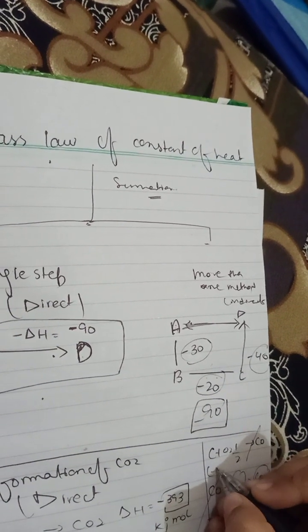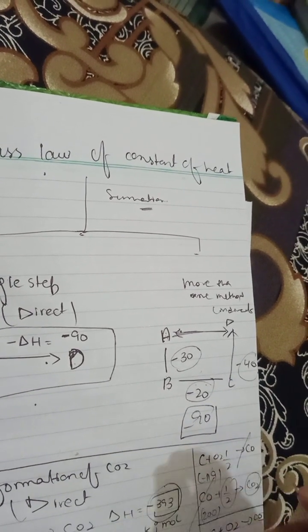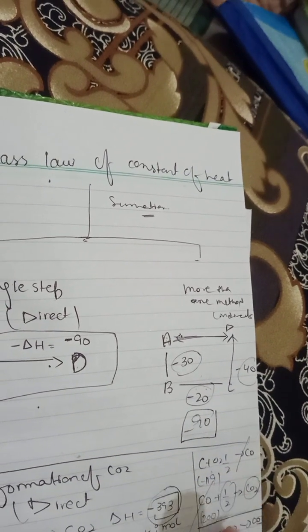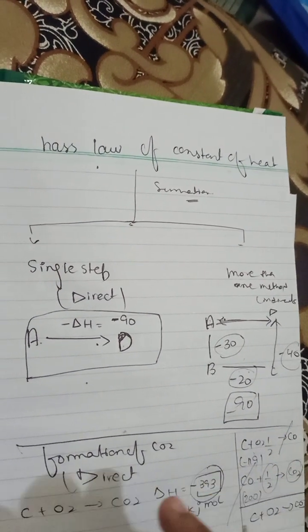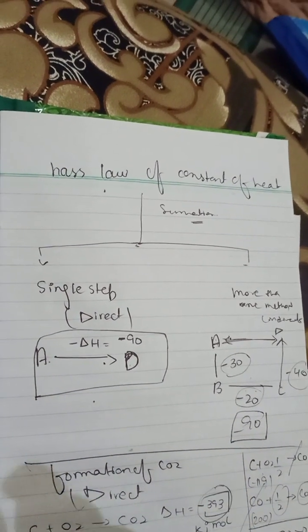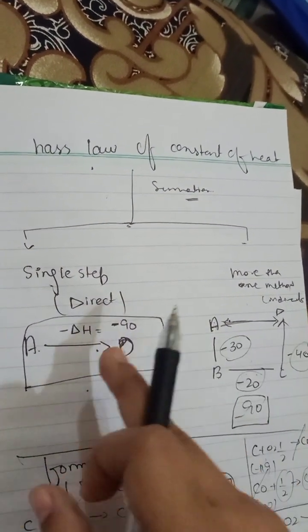So here, for example, it took this energy and here it took this energy. When you add them, this will be the answer. So the energy is the same, but it consumed different amounts. One varies with more than one step and one consists of one step.